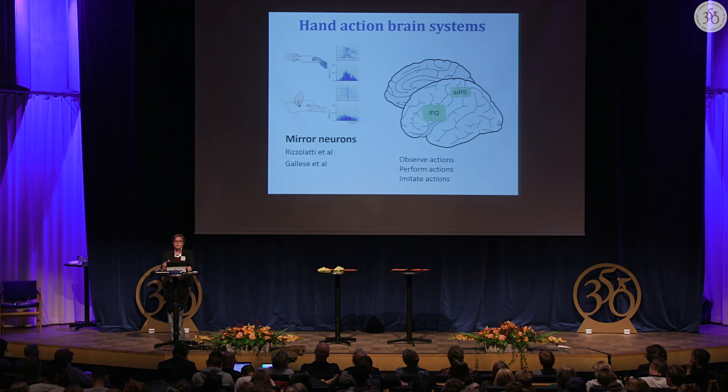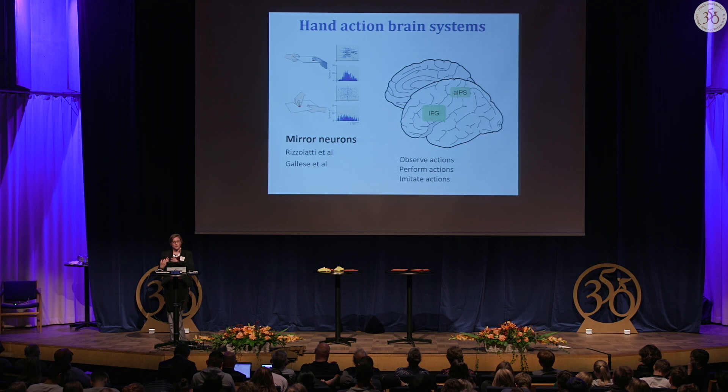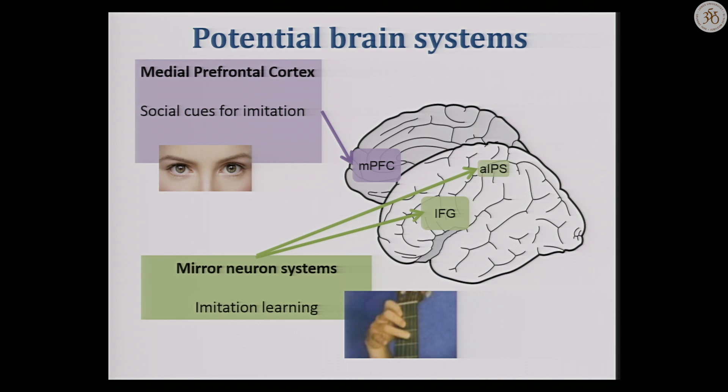These were named mirror neurons — a provocative name — suggesting they're a core mechanism of social interaction, linking the visual image of another person's hand on the retina to the motor commands you need to perform an action yourself. That's not a trivial problem to solve. Initially discovered in macaques, neuroimaging studies have identified equivalent systems in humans — inferior frontal gyrus and anterior intraparietal sulcus — which respond when you observe actions, perform actions, or imitate actions, suggesting they're important for understanding what others do and for controlling your own hand actions.